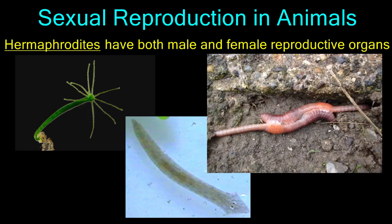Another example of a hermaphrodite is the planarian or flatworm. Earthworms are also hermaphroditic. Both planaria and earthworms cross-fertilize with a partner. Each worm donates sperm and receives sperm during the interaction. Most hermaphrodites possess traits that keep them from self-fertilizing, because self-fertilization would not produce the genetic variation that is the whole point of sexual reproduction.